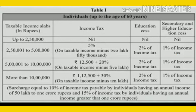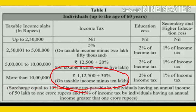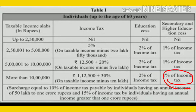If any person's annual income is more than ten lakhs, they have to pay rupees one lakh twelve thousand five hundred plus thirty percent on taxable income minus ten lakhs, along with two percent education cess and one percent secondary and higher education cess. That completes Table 1.